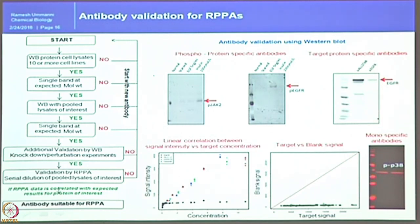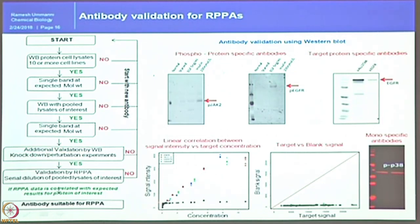Once we have this, we use siRNA — now available for all proteins expressed in the proteome. We buy the siRNA, downregulate the target, transfect the cells, make lysates, run them on a western blot, and check whether this antibody is really detecting the downregulation or not. In this case, we gave cells siRNA against EGFR and our antibody detected the downregulation of EGFR. It has passed the knockdown or perturbation experiment step. After this, we validate by reverse phase protein array.